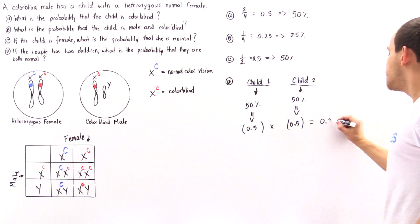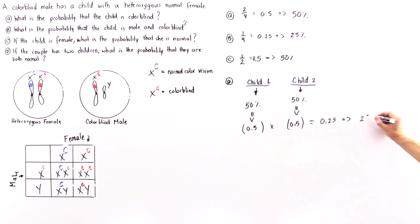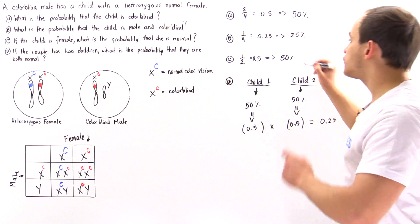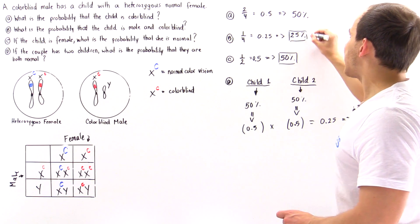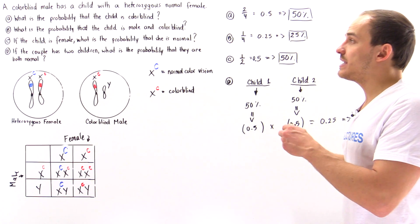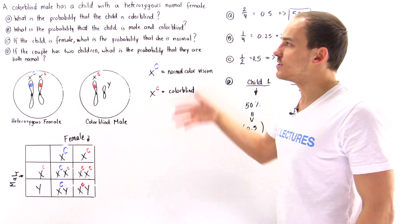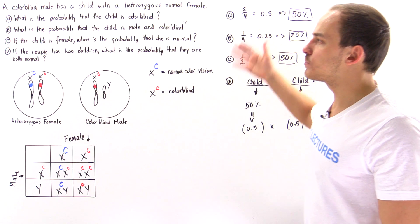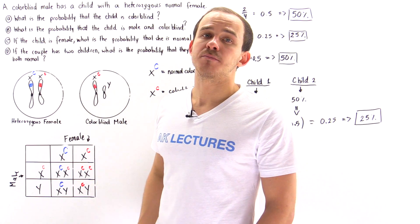Multiplying 0.5 by 0.5 gives 0.25, meaning there is a 25% likelihood that if this couple has two children, both of those children will be normal. This is how you use sex chromosomes and the Punnett square to determine probability values in genetic problems.